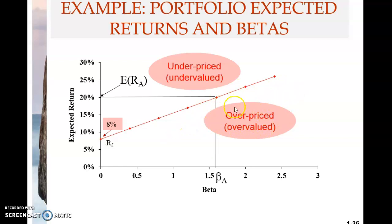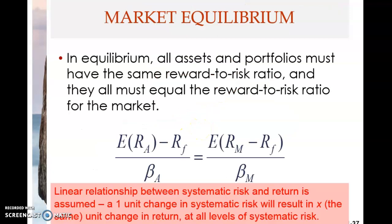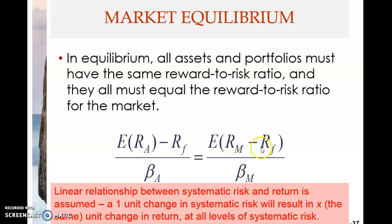In market equilibrium, all assets and portfolios must have the same reward-to-risk ratio, and they must all equal the reward-to-risk ratio of the market. So the expected return for stock A minus the risk-free rate divided by the beta for stock A must equal the expected return of the market minus the risk-free rate divided by the beta for the market. The beta for the market is always one.